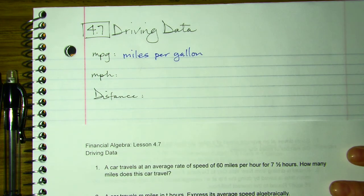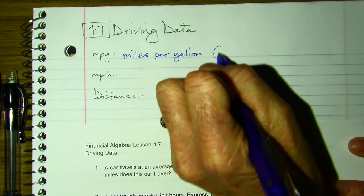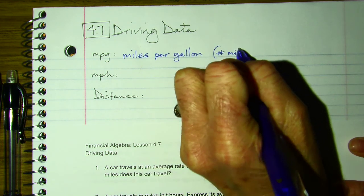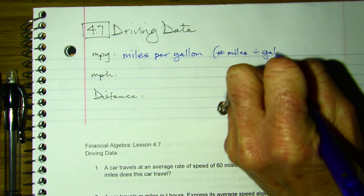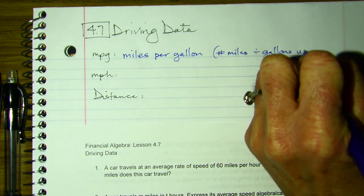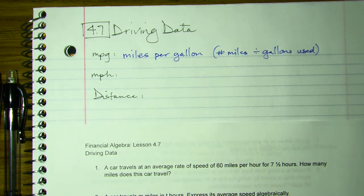MPG is miles per gallon. We take the number of miles and divide it by the number of gallons used. So number of miles divided by gallons used, and that will tell us miles per gallon.